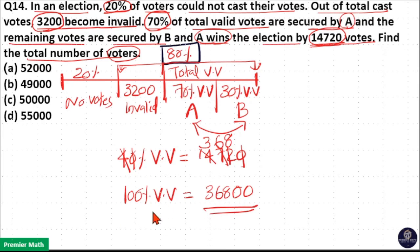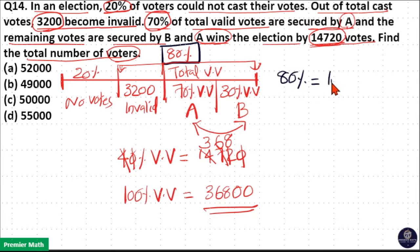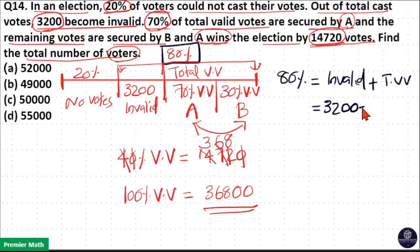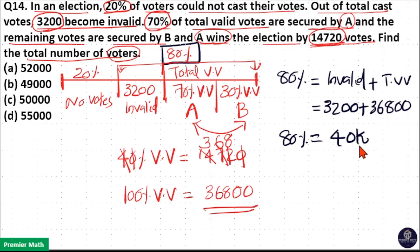100% of valid votes means total valid votes, which is 36,800. Then, what is 80%? 80% is invalid votes plus total valid votes, which equals 3200 plus 36800, which equals 40,000. So 80% is 40,000.